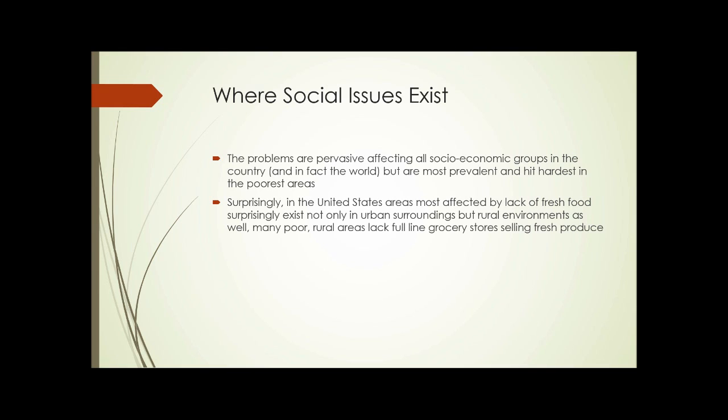So where do these social issues exist? The problems are pervasive and they affect all socioeconomic groups in the country and in the world, but they are most prevalent and hit hardest in the poorest areas. Surprisingly, in the United States, areas most affected by lack of fresh food exist not only in urban surroundings but in rural environments as well — many poor rural areas lack full-line grocery stores selling fresh produce.